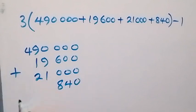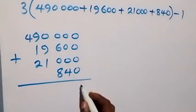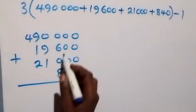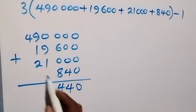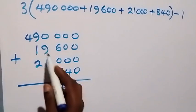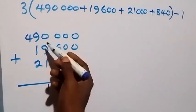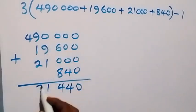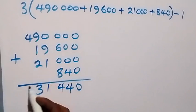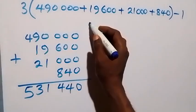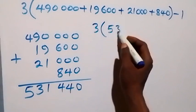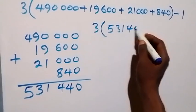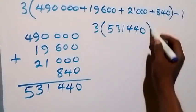Now I will multiply this by 3. 531,440 times 3: 0 times 3 is 0; 4 times 3 is 12, that's 2 carry 1; 4 times 3 is 12 plus 1 is 13, that's 3 carry 1; 1 times 3 is 3 plus 1 is 4; 3 times 3 is 9; 5 times 3 is 15. So we have 1,594,320, then minus 1.